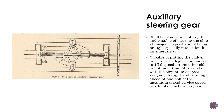The auxiliary steering gear shall be capable of putting the rudder over from 15 degrees on one side to 15 degrees on the other side in not more than 60 seconds, with the ship at its deepest seagoing draft and running ahead at one half of the maximum ahead service speed or seven knots, whichever is greater. For example, if maximum speed is 16 knots, half is 8 knots — and 8 knots is used; if maximum speed is 12 knots, half is 6 knots, so 7 knots is used as it is the higher value.